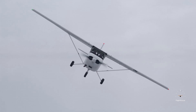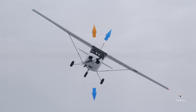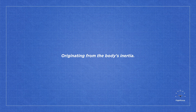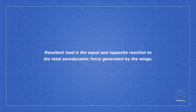When an aircraft banks for a turn, the lift force tilts, creating two components of lift: the vertical and horizontal components. The vertical component acts upward, supporting the weight of the aircraft. The horizontal component acts towards the turn's direction, also known as the centripetal force. Two other forces are also created: the centrifugal force and the resultant load. The centrifugal force is an apparent force that pushes outward on a body moving around a center, originating from the body's inertia, while the resultant load refers to the equal and opposite reaction to the total aerodynamic force generated by the wings.